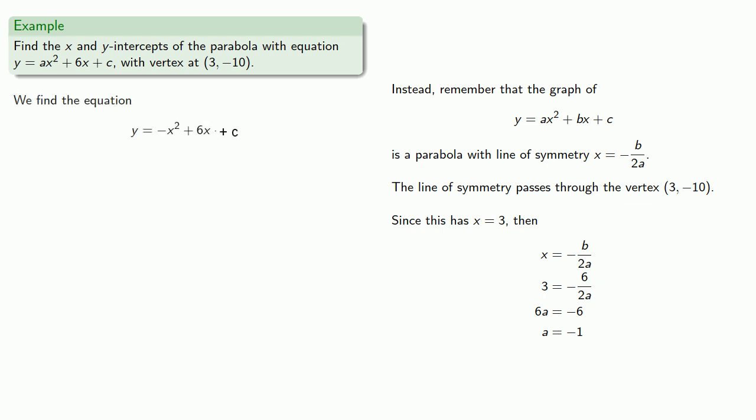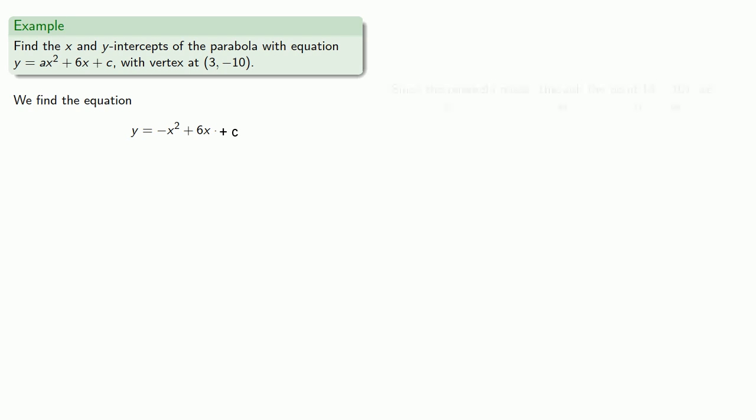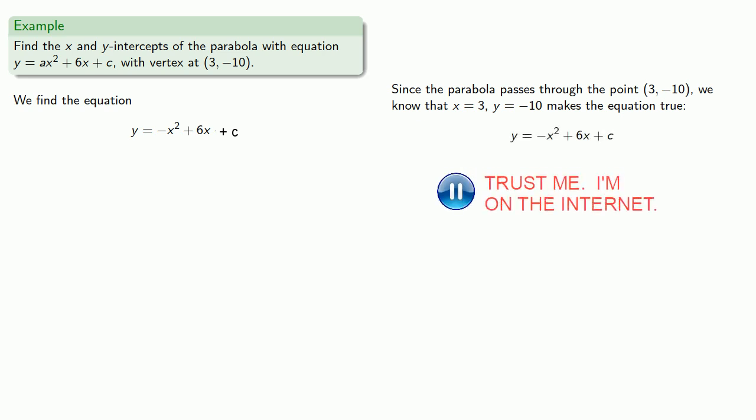And so we find our equation y = -x² + 6x + c. Since the parabola passes through the point (3, -10), we know that x = 3, y = -10 makes the equation true.